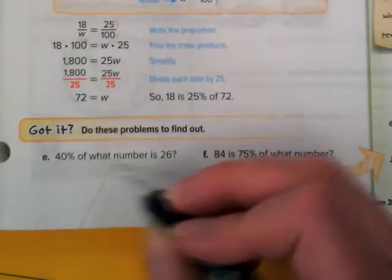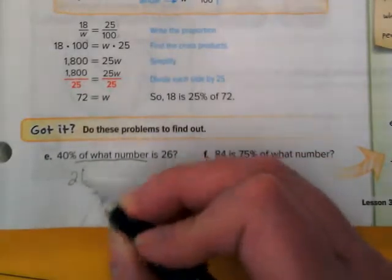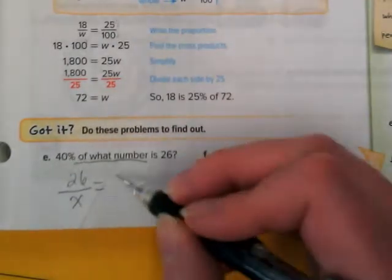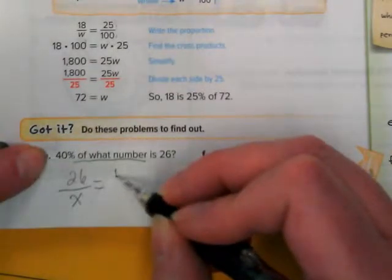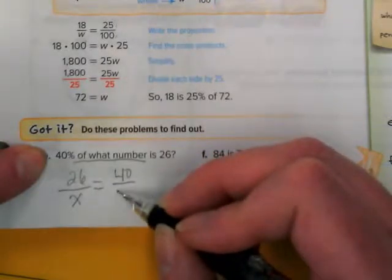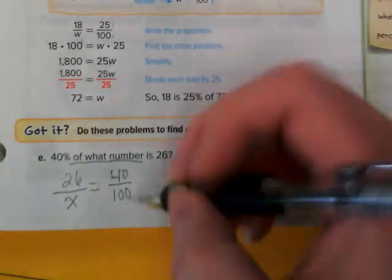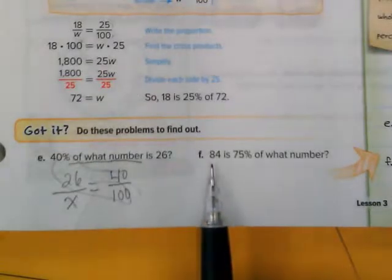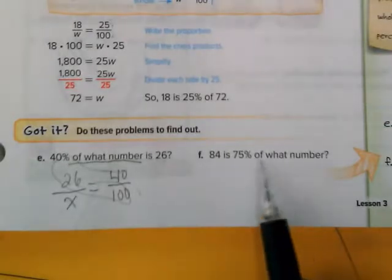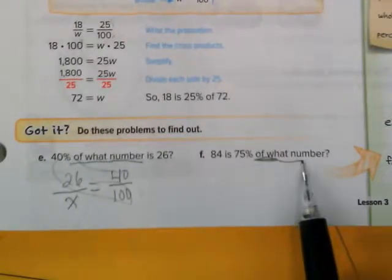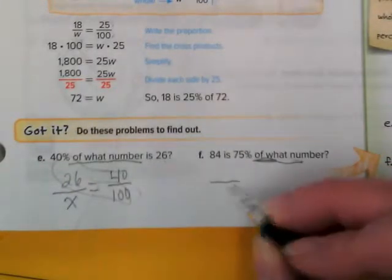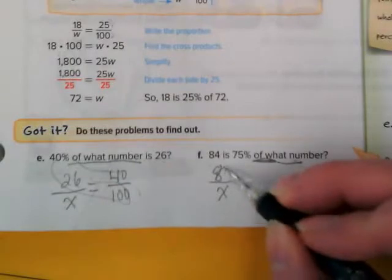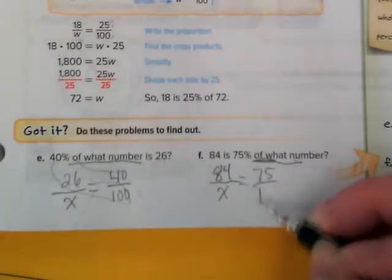Let's try these problems down here. Forty percent of what number is twenty-six? So twenty-six is going to have to go over a variable—that's our unknown this time. Is equal to what over here? Forty. Forty percent. And how do we show that it's a ratio? Forty over a hundred. We would cross multiply, divide by forty. And let's set up one more together. Eighty-four is seventy-five percent of—there's my key right there—of what number? Since we don't know what this is, that's where our unknown goes. What's going to go above it? And it's going to be equal to seventy-five percent. I think you guys are ready for some practice on this now.